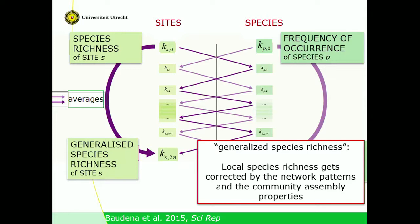You get the 'even reflection' index — it contains the same information as species richness but corrected by the network patterns and community structure throughout the network.